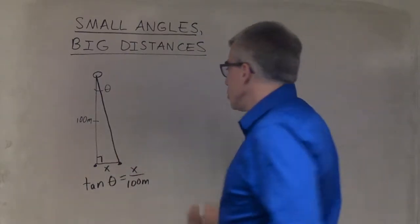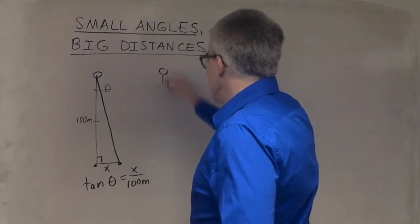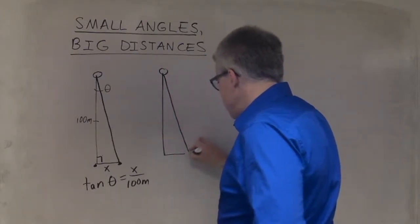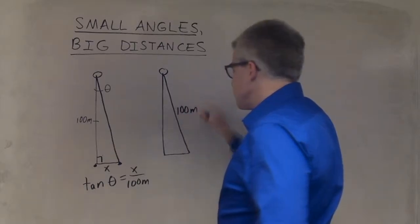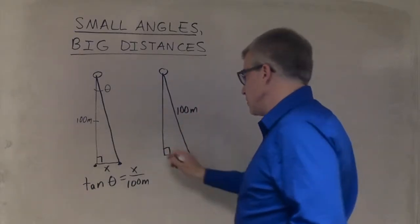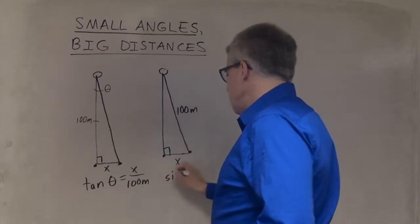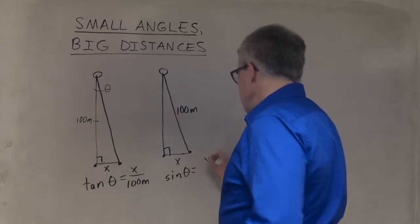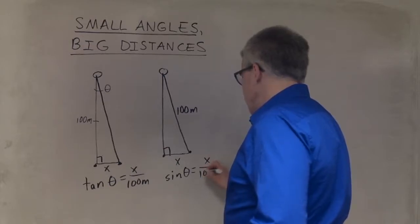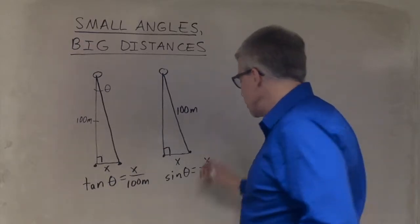But what if you were thinking, what if that's 100 meters? And that's 90. And this is still x. So then you would have sine of theta equals x over 100 meters.